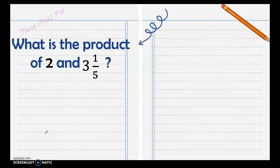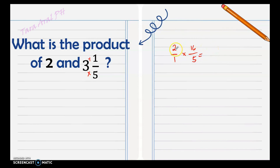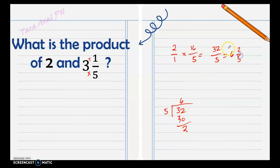Let's have more examples. What is the product of 2 and 3 and 1 fifth? If the given is a whole number, put 1 as the denominator. If the given is a mixed number, change it into an improper fraction by multiplying the denominator and whole number and adding it to the numerator. So we have 5 times 3 is 15, plus 1 is 16 — copy the denominator. Then we multiply: 2 times 16 is 32, over 5. Since it's improper, we change it to a mixed number: 6 remainder 2. So our answer is 6 and 2 fifths.